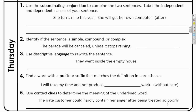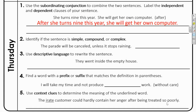Label the independent and dependent clauses of your sentence. The two sentences are: 'She turns nine this year' and 'She will get her own computer.' The subordinating conjunction they want us to use to combine the sentences is 'after.' So let's start with that subordinating conjunction and write: after she turns nine this year, comma, she will get her own computer.